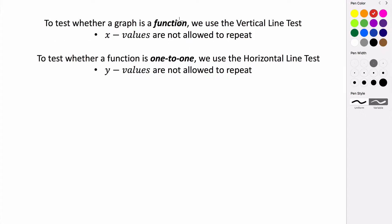In order for a function to have an inverse that is also a function, our function has to be one to one. So what it means to be one to one is that none of our output values repeat. So y values are not repeated.